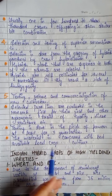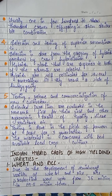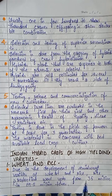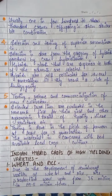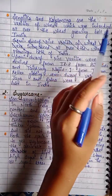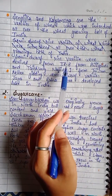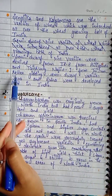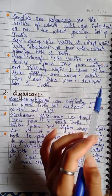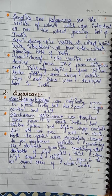Indian hybrid crops with high yield varieties. First — wheat and rice. Due to the development of semi-dwarf varieties of wheat and rice, rice production went up from 35 million to 89.5 million tons. Sonalika and Kalyan Sona are varieties of wheat introduced all over the wheat-growing belt of India. Semi-dwarf rice varieties were derived from IR8 from the Philippines and Taichung Native 1 from Taiwan. Better yielding semi-dwarf rice varieties Jaya and Ratna were developed later in India.